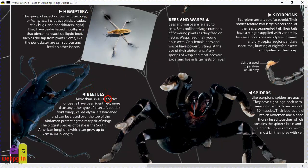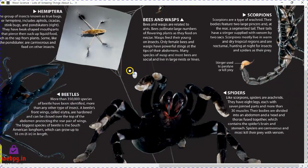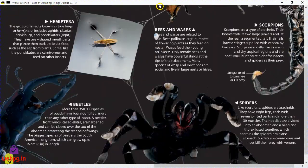More than 350,000 species of beetles have been identified — more than any other type of insect. A beetle's front wings, called elytra, are hardened and can close over the top of the abdomen, protecting the rear pair of wings. The biggest species of beetle is the South American longhorn, which can grow up to 16 centimeters in length — they are so big.